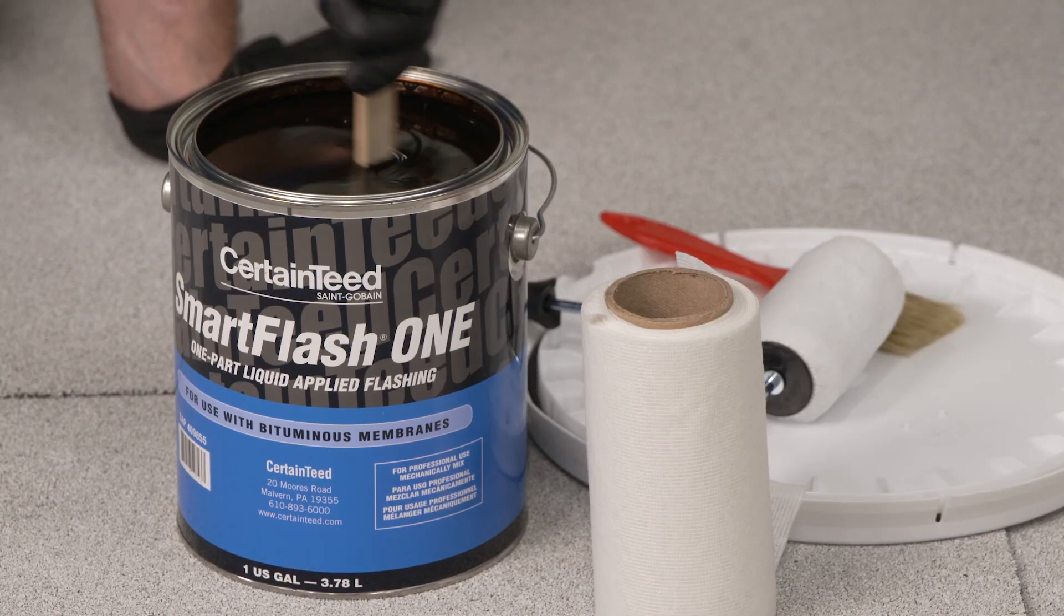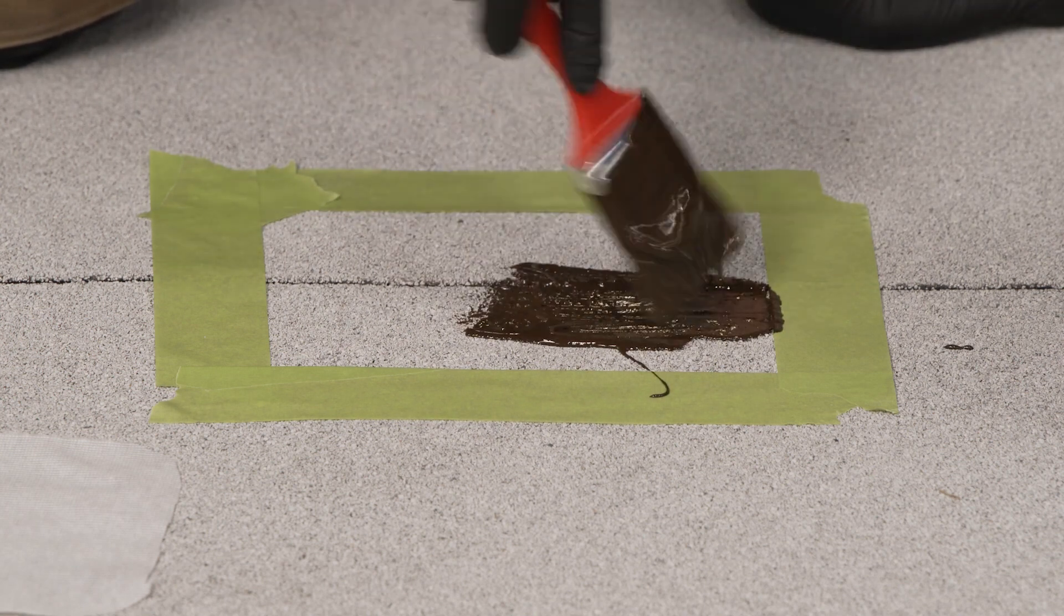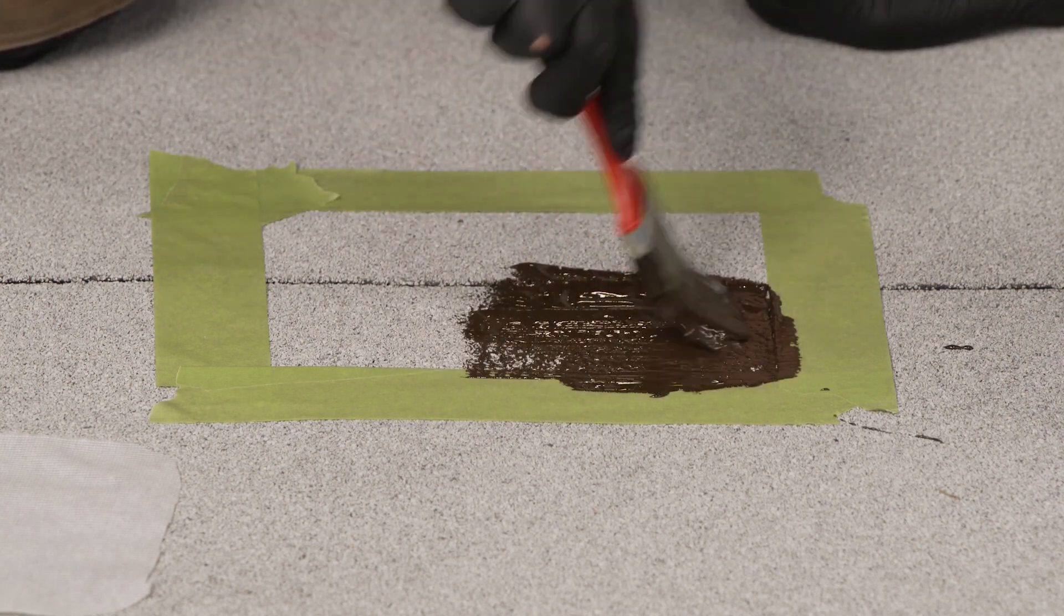First, apply about 30 wet mils of resin, extending 4 inches beyond the problem area in all directions.